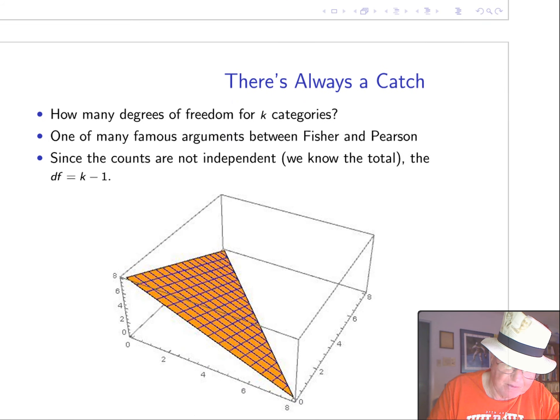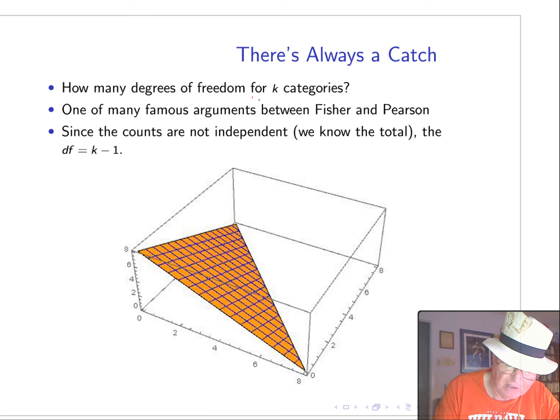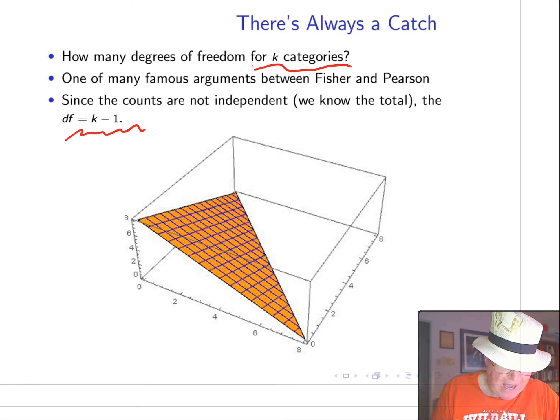Of course, there's always a catch. How many degrees of freedom do we use compared to the number of categories? So, in k categories, how many degrees of freedom? About 100 years ago, Ronald Fisher and Carl Pearson had a big argument about this. Fisher, being a little bit smarter, but perhaps not as well connected, was gratified to actually win the argument and show that it was k minus 1 degrees of freedom, while Pearson had been holding out for k degrees of freedom.